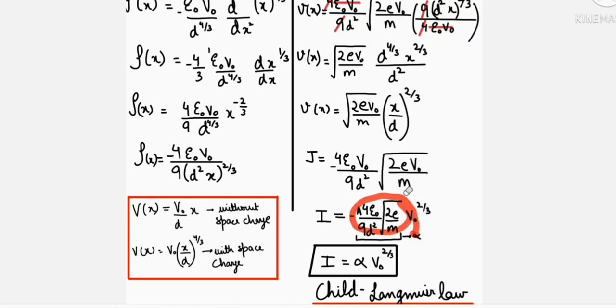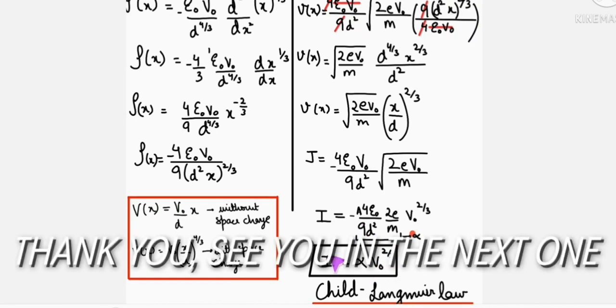Let's assume this equals alpha. So I equals alpha into V naught raised to the power 2 by 3. This is known as Child's law.